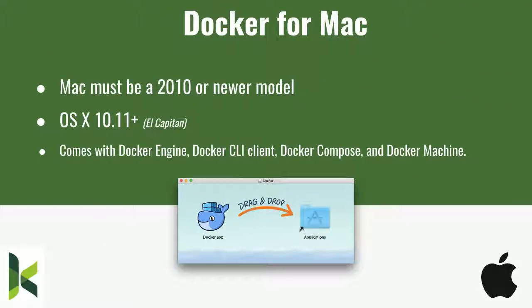These are Docker images and how you would install Docker. This is Docker for Mac — if you go to docker.com and look up how to install on a Mac, this is what you'll see. It requires a Mac that is 2010 or newer and OS X El Capitan or newer, because of HyperKit, which comes with that version. Docker for Mac comes with Docker Engine, the command line client, Docker Compose — which is awesome for creating multiple containers and linking them together — and Docker Machine. It's really easy to install with drag and drop.